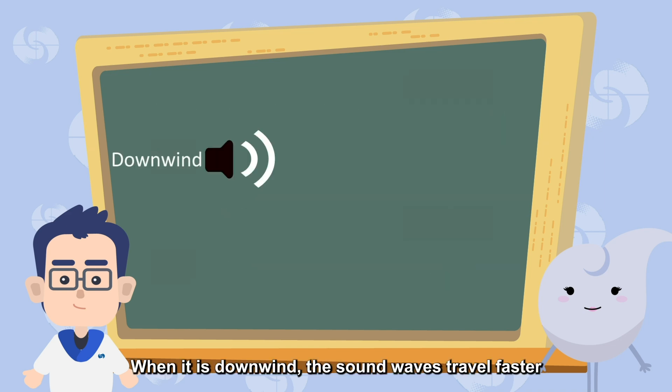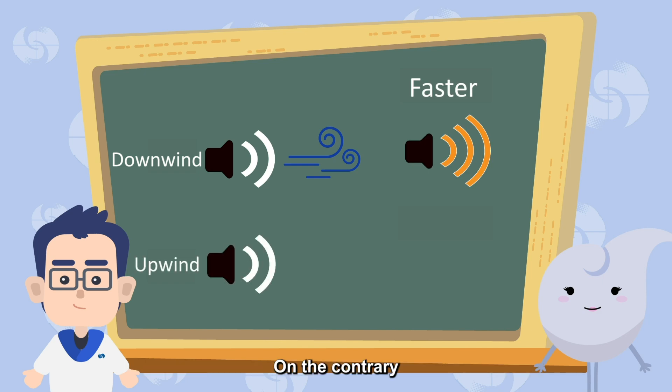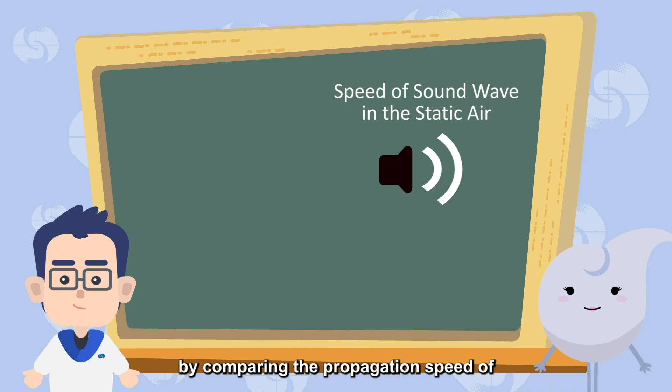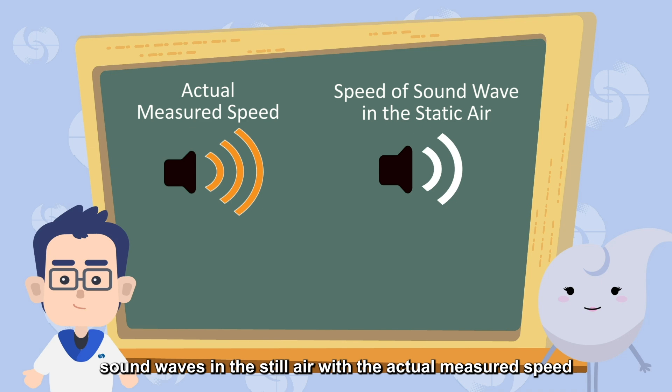When it is downwind, the sound waves travel faster. On the contrary, the sound waves travel slower when it's upwind. Therefore, the wind speed can be calculated by comparing the propagation speed of sound waves in the still air with the actual measured speed.